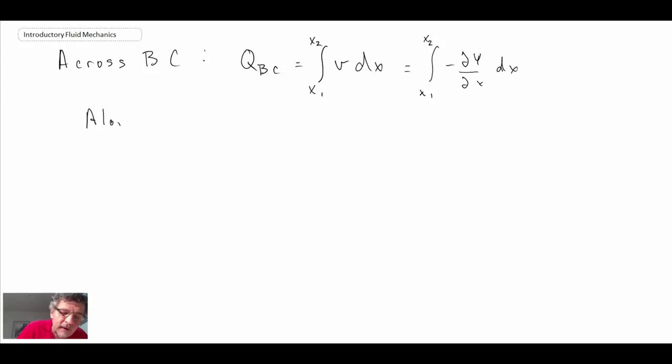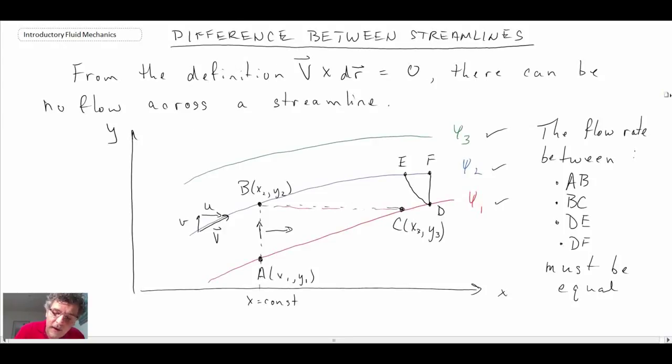Along BC, looking back at that line, we see just like before, along BC, y is equal to a constant. So we're going to use that.